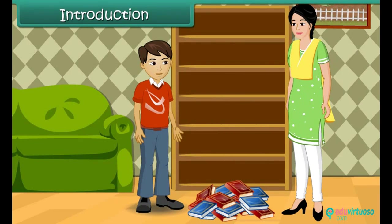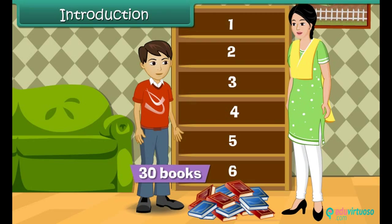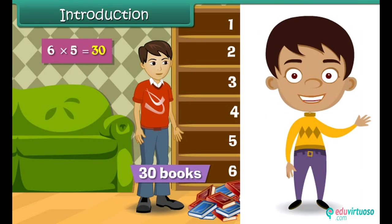Look at this bookshelf. There are six sections in the bookshelf. Ram's mother asked him to arrange 30 books in the shelf with each section containing equal number of books. Now how is Ram going to do the work? It is easy if Ram knew division. He has 30 books and six sections, so each section will have five books. Simple, isn't it? Do you want to learn how this is done? Let us together find this out.